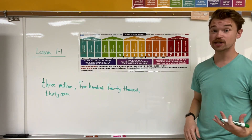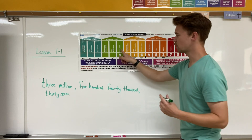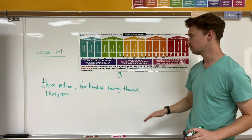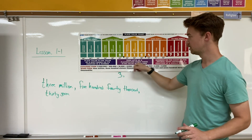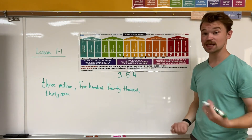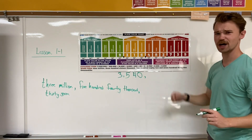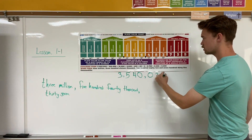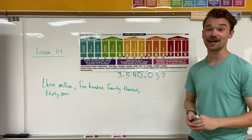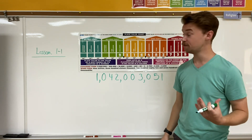Another skill is taking something in word form or number name and changing it into standard form. We go section by section, separated by commas, so each part is in a different period. Three million gives us a 3 in the millions spot. Next, 540,000: 5 in the 100,000 place, 4 in the 10,000 place, and 0 in the thousands place. Last, 37: zero in the hundreds, 3 in the tens, 7 in the ones. So I've written 3,540,037 from number name to standard form.